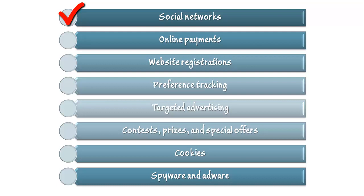Not only do users of a social networking site provide its underlying corporation with information about their preferences through the mechanism of liking something, but they also provide much additional private information including age, gender, relationship status, occupation, place of birth, educational history, family members, who the user knows, what the user likes, and even where the user is located at that moment in time. Truly, users of social networking sites are providing their underlying corporations with more private information about themselves than is known by their governments, their employers, or even their closest family and friends.